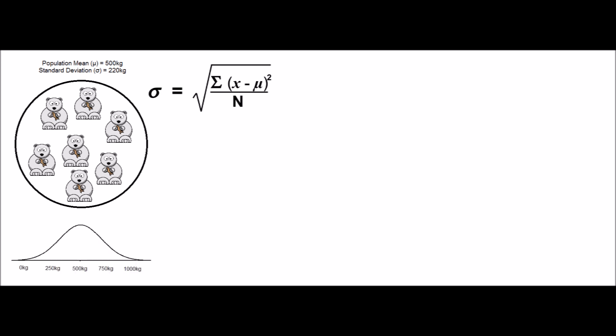When you plot the weights of all the individual adult polar bears as a probability distribution, it looks something like this. The curve will be centered around the mean, or 500 kg in this case, and the spread of the observations around the mean is described again by the standard deviation.